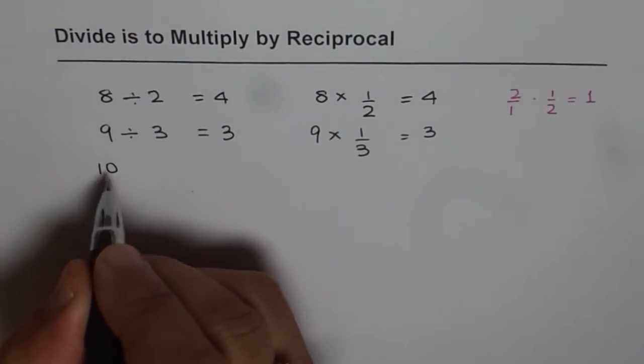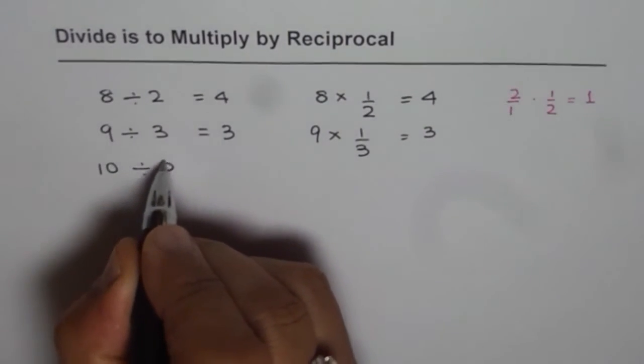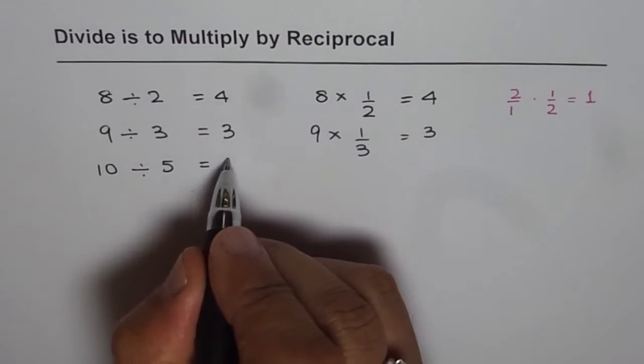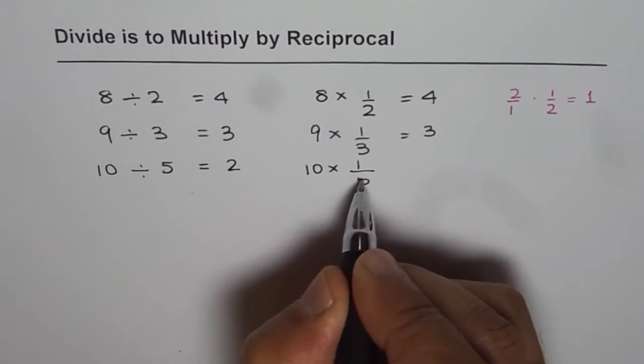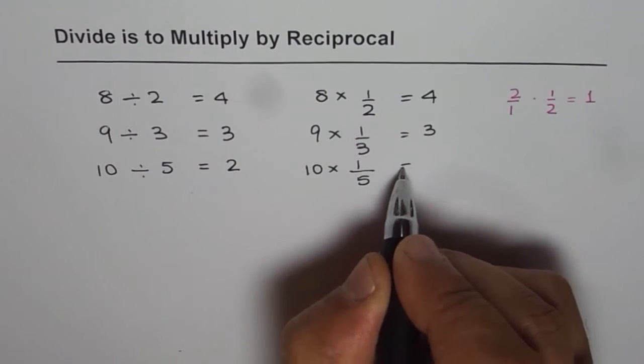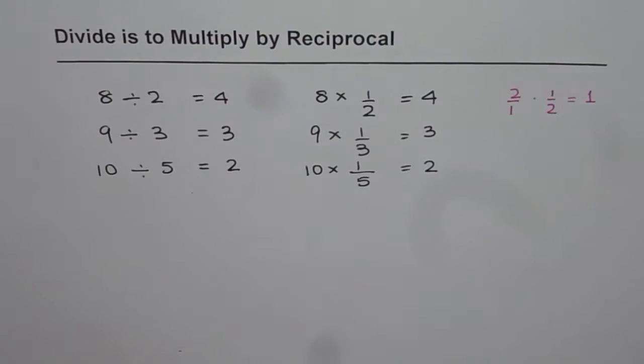How about 10 divided by 5? 10 divided by 5 is 2 and 10 times 1 over 5 which is 1 fifth of 10 is also 2. So we see that dividing is same as multiplying by reciprocal.